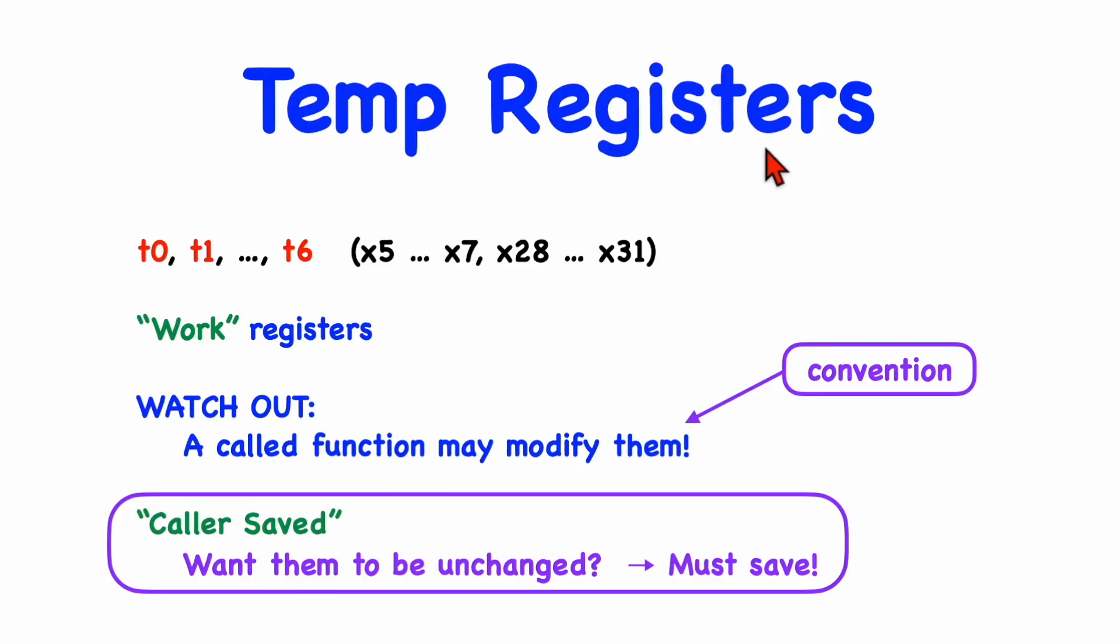We've also got seven temporary registers with the names T0 through T6. By convention, these are used as work registers, that is, within a function you can use them for any computation that you need to do. But, the standard programming convention means that these can be modified by any function that is called. So, if you're using them within some function, you better watch out if you call some other function because they may get trashed or modified by the called function. So we say that these registers are caller saved. Okay, if you want them to have values that are preserved across a call to some sub-function, then it is the responsibility of the calling function, or the caller function, to save them somewhere, presumably on a stack. The argument registers are also said to be caller saved because they would be used as arguments to the called function.